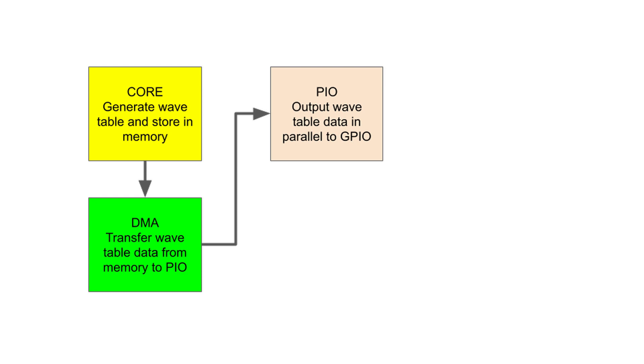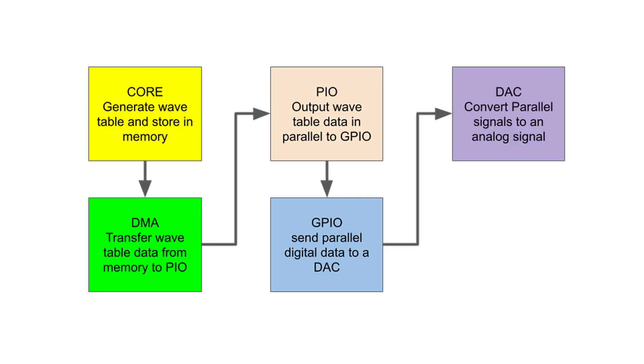The PIO, which runs at the state machine clock frequency, outputs 8-bit parallel information to a digital-to-analog converter. The resulting analog signal is then amplified by a high-speed operational amplifier.